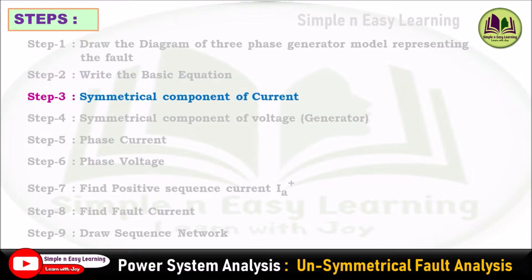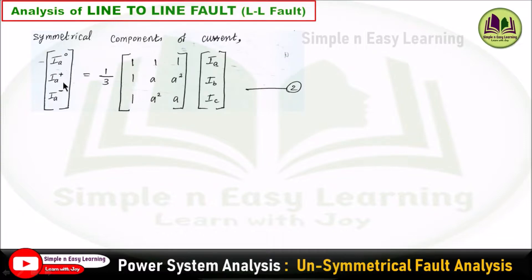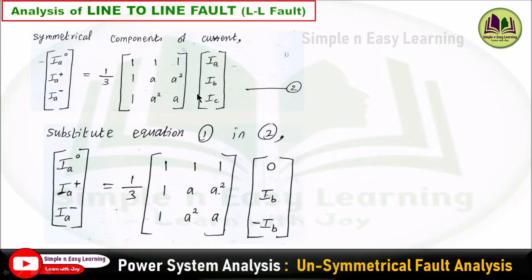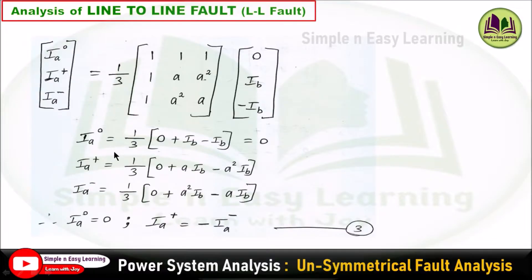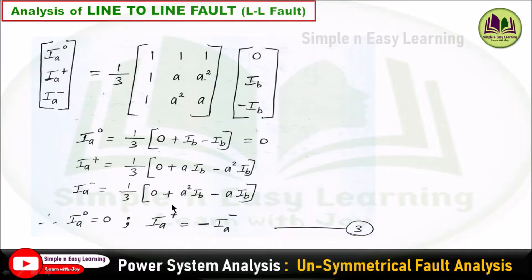Step 3: consider the symmetrical component of current. The symmetrical component equation is [Ia0, Ia+, Ia−] = T⁻¹ × [Ia, Ib, Ic]. Substituting equation 1 (Ib = −Ic, i.e., Ic = −Ib) and expanding the matrix: Ia0 = (1/3)(0 + Ib − Ib) = 0. For Ia+, the term is (1/3)(A·Ib − A²·Ib), and for Ia− it is (A²·Ib − A·Ib), which differs only by sign. Therefore, we conclude Ia0 = 0 and Ia+ = −Ia−. This is equation 3.